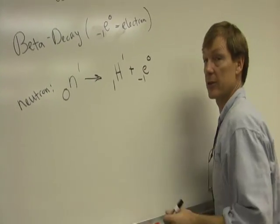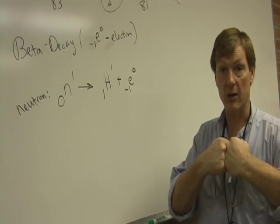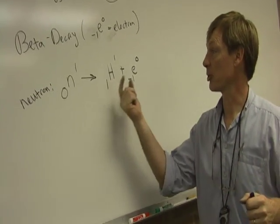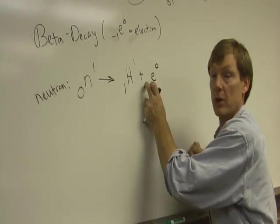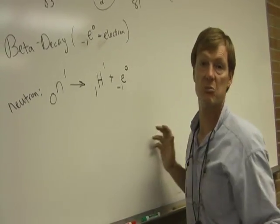I am not saying that a neutron is a proton and electron smashed together. I'm not going that far. I'm just saying that when it decays, it becomes a proton and an electron. You can see they balance out. The atomic number here is 0. 1 minus 1 is 0. Nucleon number here is 1. 1 plus 0 is 1.